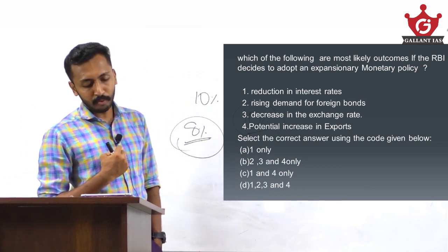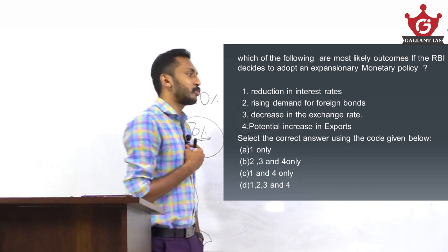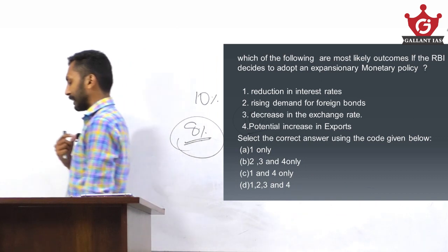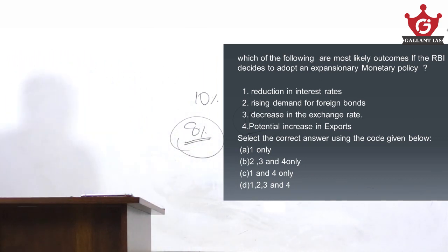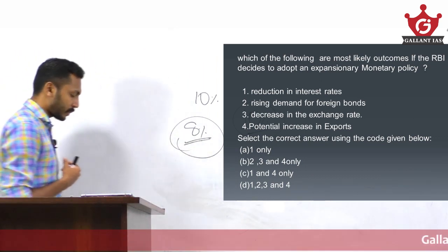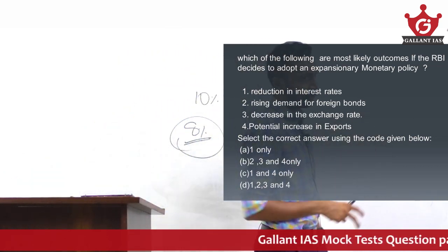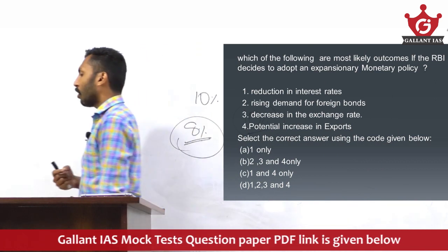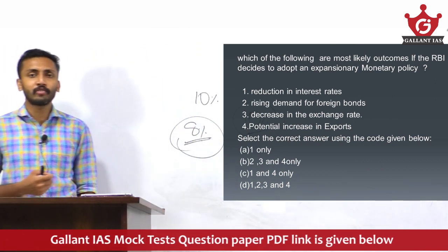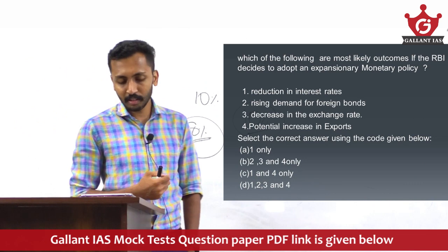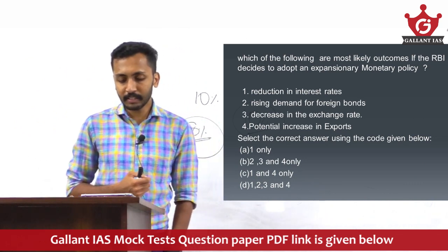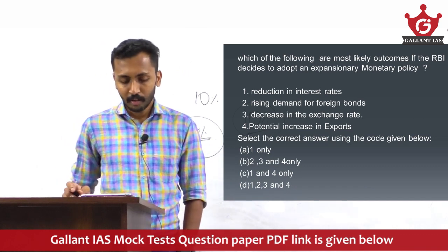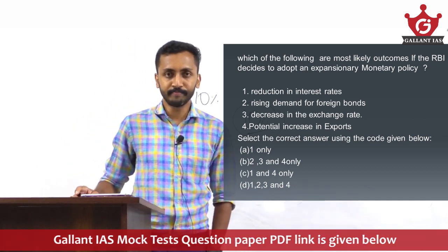Fourth: potential increase in exports. When there is a fall in the exchange rate and currency depreciation happens, it will positively impact exports — it will increase exports. So all four options are outcomes of expansionary monetary policy. The answer is option D — all statements, one, two, three, and four, are correct. Thank you.